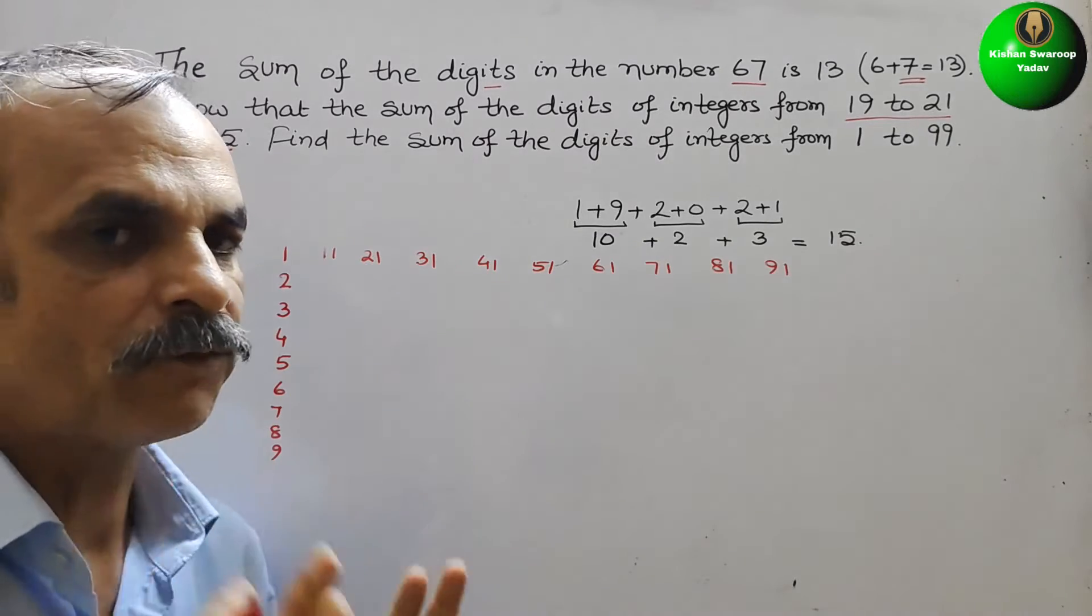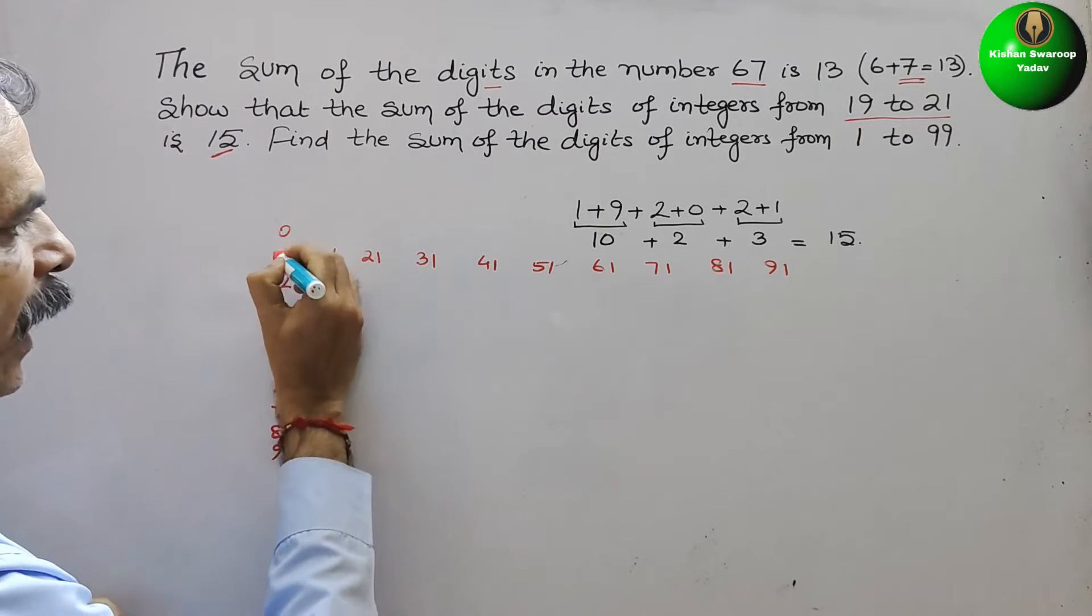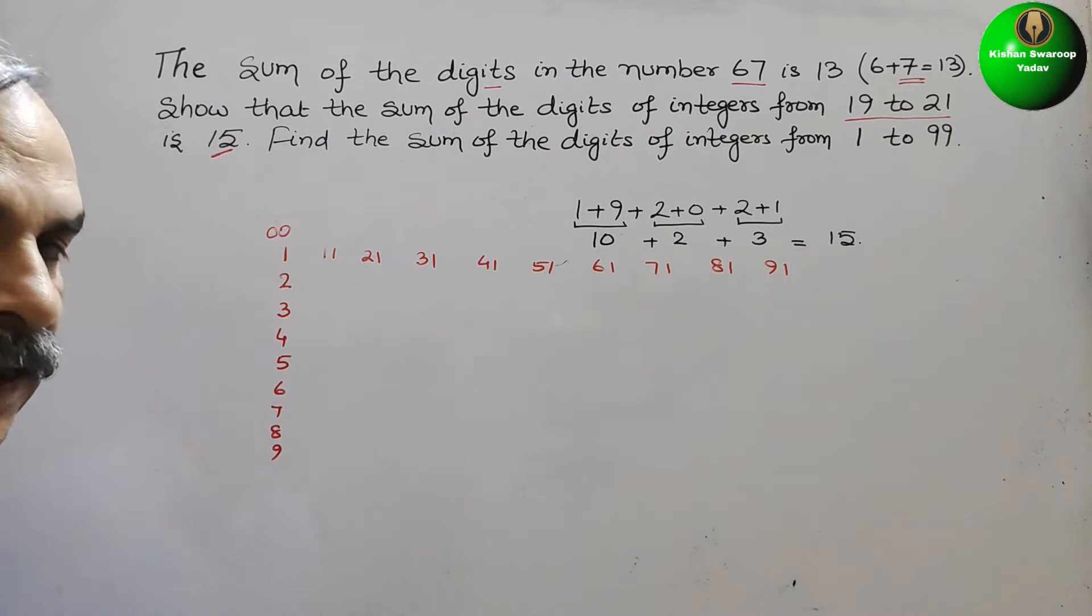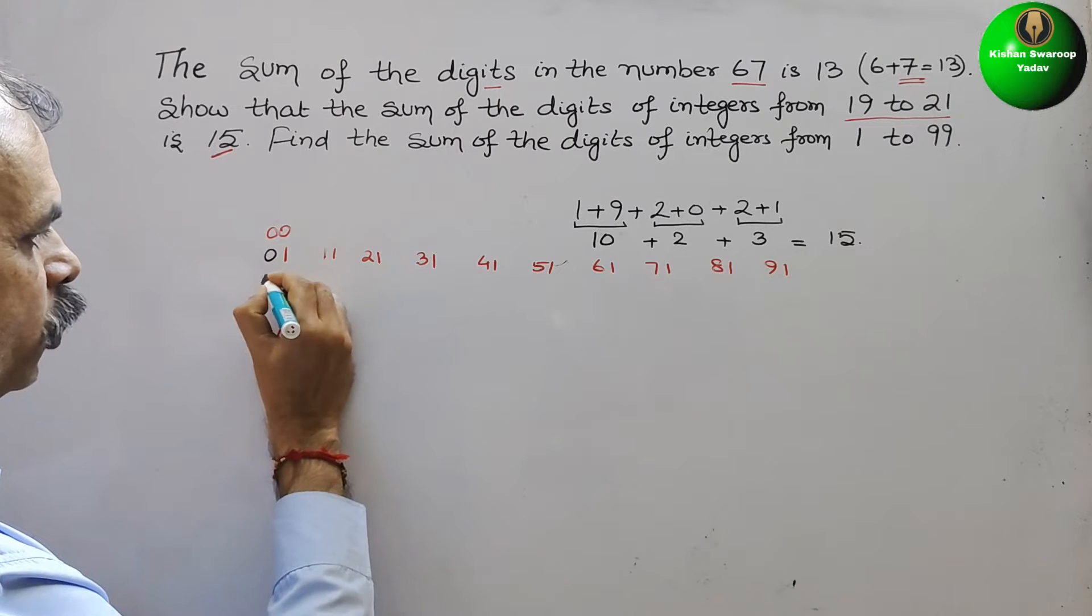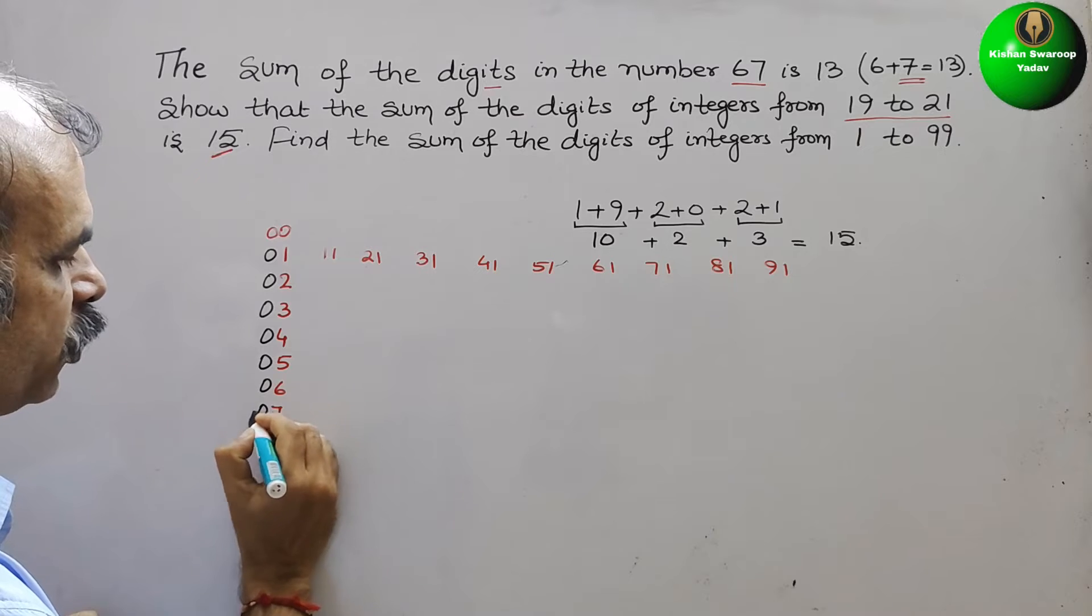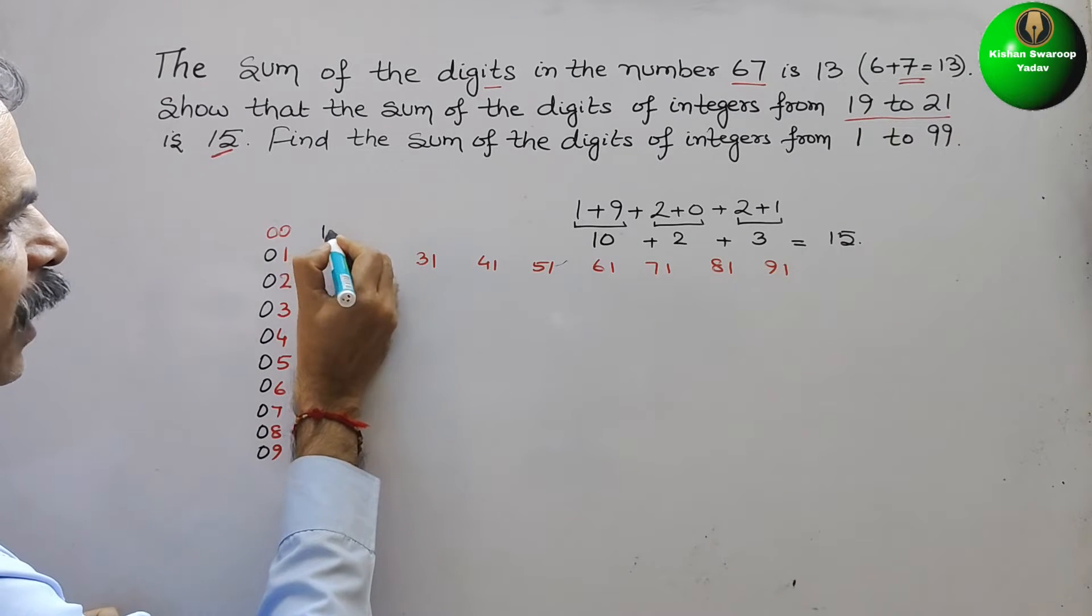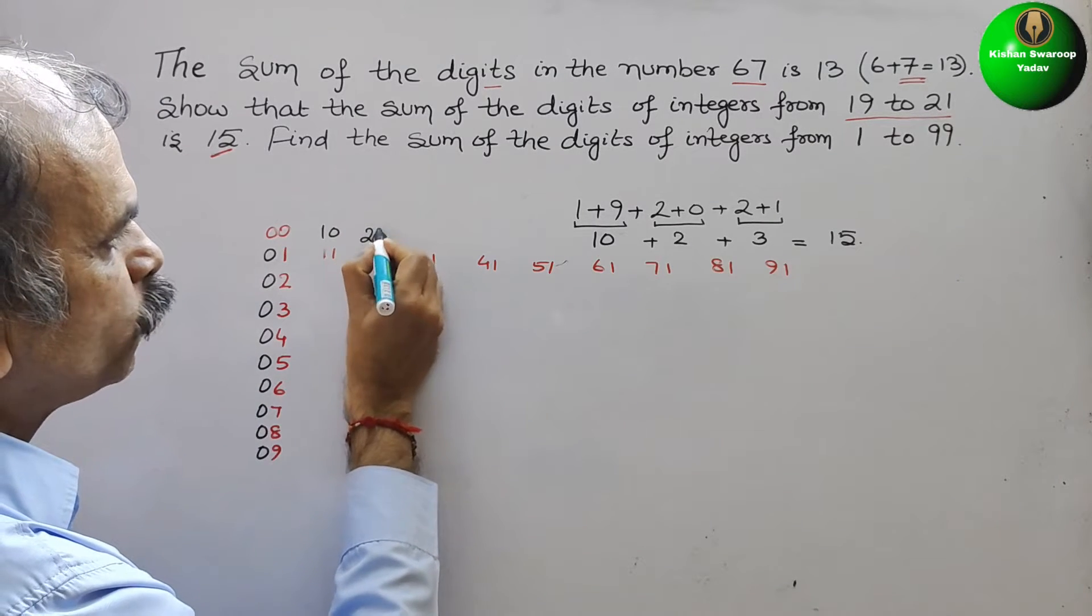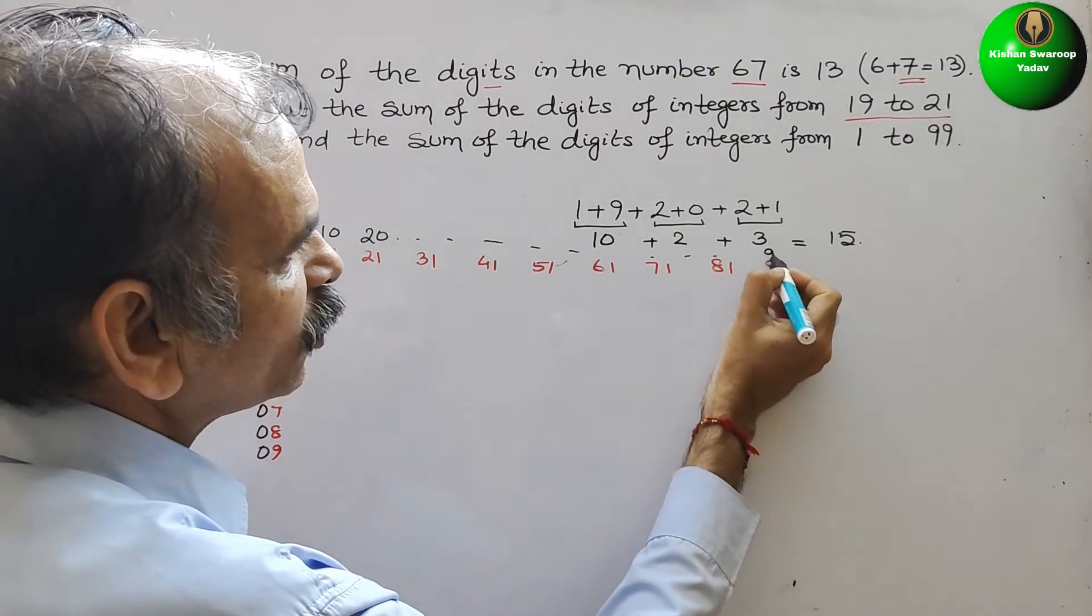In this, what do we have to do? Here we have to put 0, and here comes 00. First is 00, second is 01, 02, 03, 04, 05, 06, 07, 08, 09. And here comes 10, like that we have to write, here comes 20.